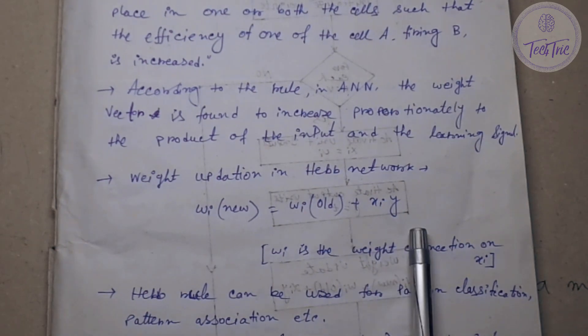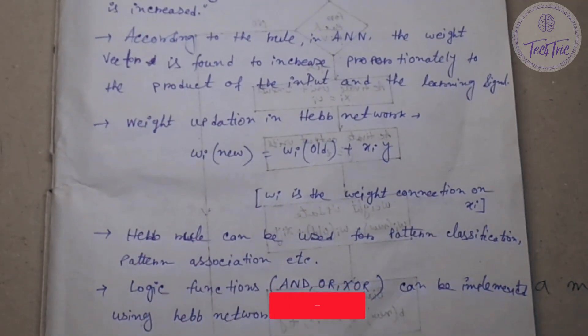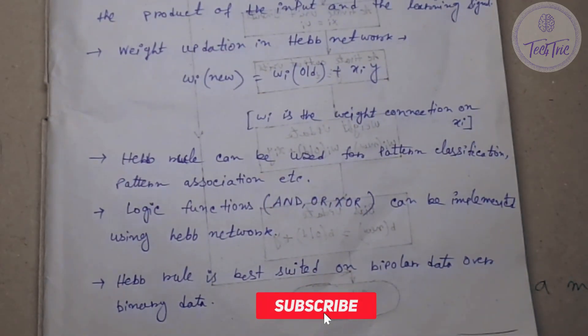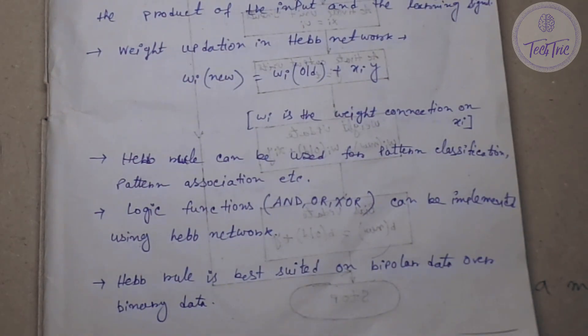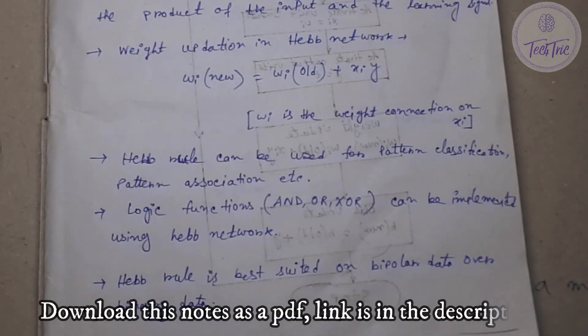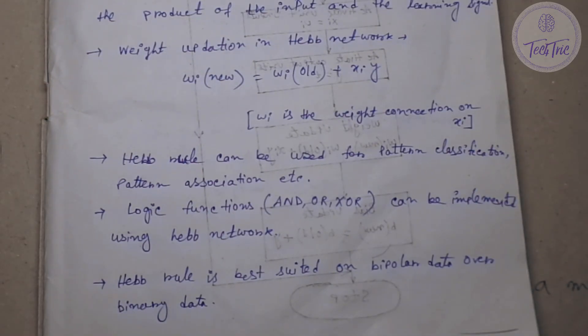Hebb rule can also be used for pattern recognition, pattern association, pattern classification, etc. Logic functions like AND, OR, XOR can be implemented using Hebb network. Hebb network is best suited on bipolar data over binary data.